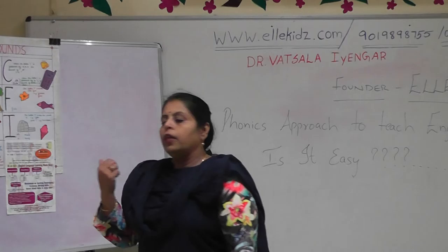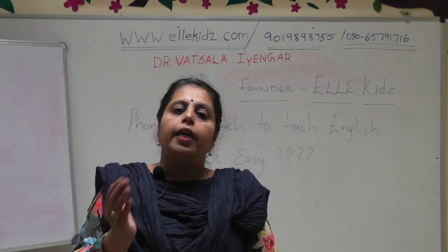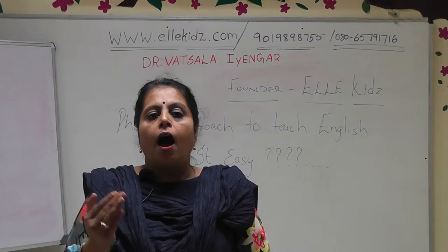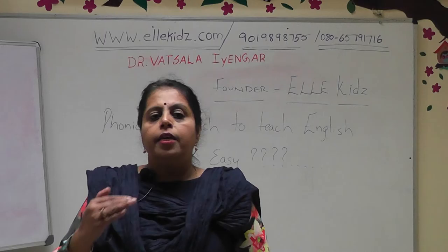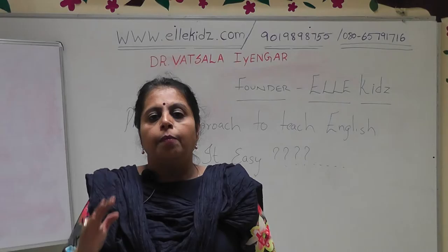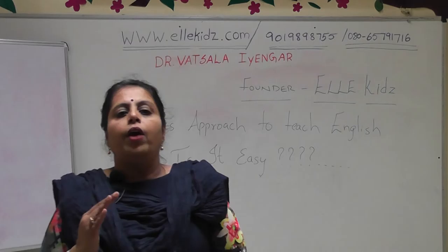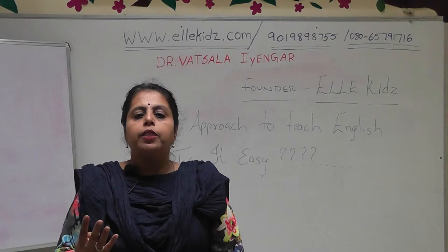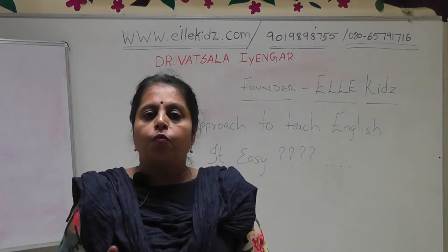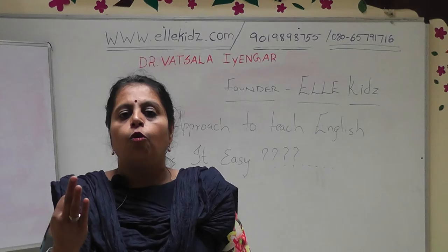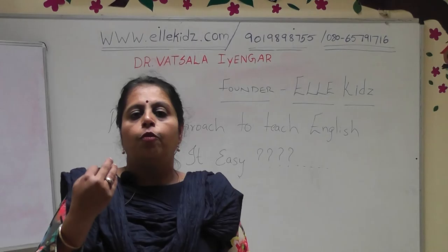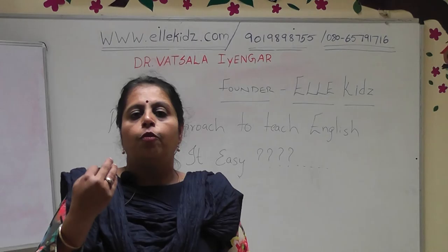Now let us understand the long I sound. The letter I makes the long sound /aɪ/ when there is a magic key — a silent E — at the end of the word. An important thing the child must understand is that what he hears may differ from what he writes. For example, the word 'kite' is a four-letter word and he must write four letters. But when he hears it, he only hears three letter sounds. The magic key plays a very important and significant role in English.